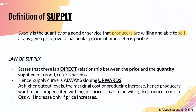The law of supply states that there is a direct relationship between the price and the quantity supplied of a good. When there is an increase in price, there will be an increase in the quantity supplied. Likewise, if there's a fall in price, there will be a fall in quantity supplied. The reason why is because price always acts as a signal — we call it the signaling effect.